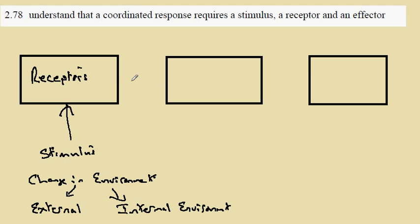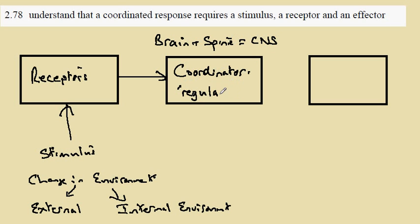The receptors refer the incoming information to what is known as a coordinator. In the human system, the coordinator is composed of the brain and the spinal cord, and together they constitute the central nervous system. These can be thought of as the regulating centers. Having compared the information and the stimulus to the regulated conditions we wish to maintain,